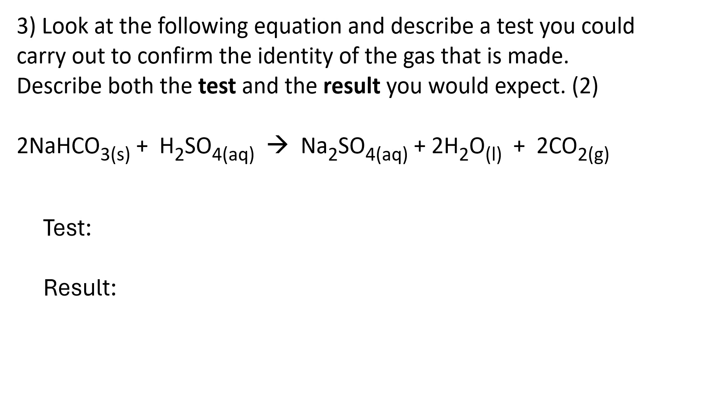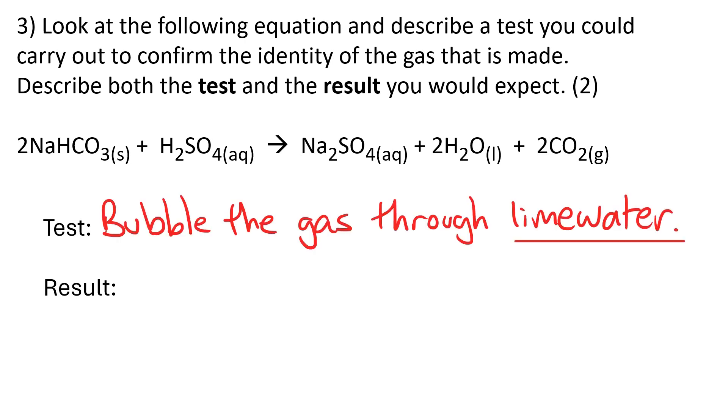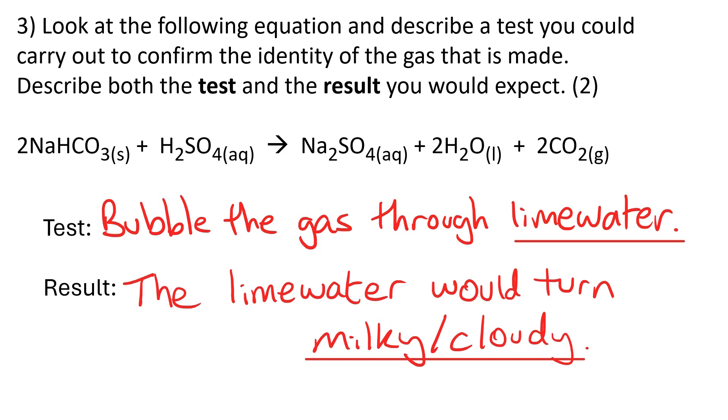Question 3. Look at the following equation and describe a test you could carry out to confirm the identity of the gas that is made. Describe both the test and the result you would expect. So in this question we need to look at the state symbols of the products. The products are on the right hand side of the arrow, and we notice one of them has got a G next to it, meaning that's the gas, and it's CO2, so it's carbon dioxide. So the test would be to bubble the gas through limewater, and the result we'd expect is the limewater would turn milky or cloudy.